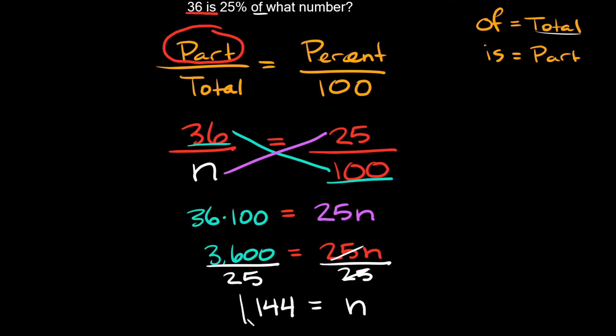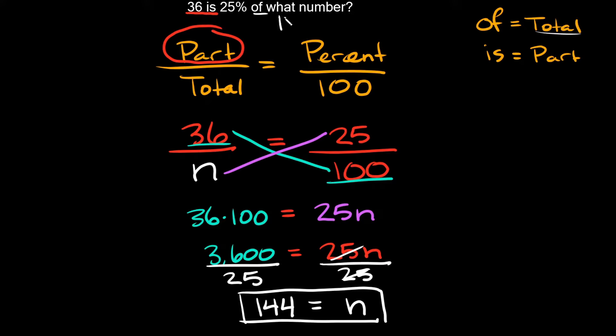So n equals 144. The answer to '36 is 25% of what number?' is 144.